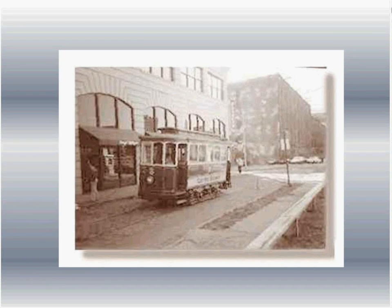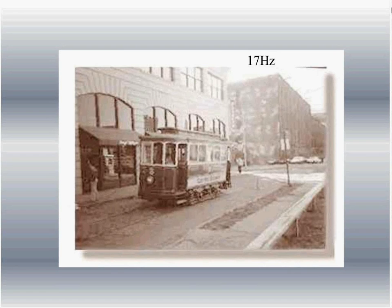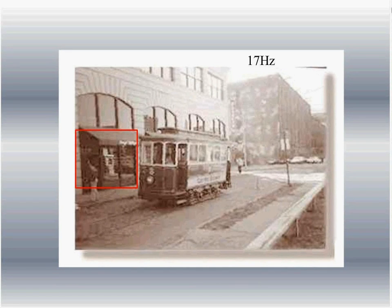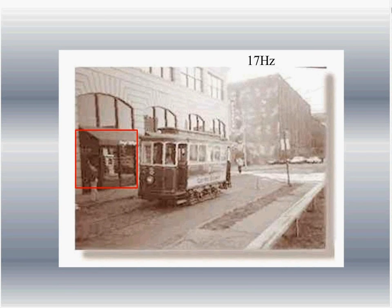Prior to that, everything was DC. We started here with AC electric, and you can see the trolley car and the old building. The trolley car liked the fact that they were running at 17 hertz, because 17 hertz meant you were getting lots of torque. However, if you were to go inside that store, the lights would be flickering, because at 17 hertz you could actually see the movement of electricity through the light bulb, and it would pulse and give you a terrible headache.